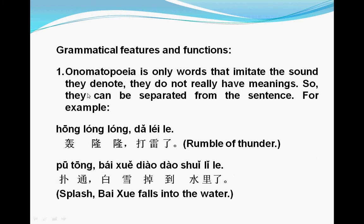Now let's look at some grammatical functions or features of xiāng shēng cí. The first thing we need to know: xiāng shēng cí are words that imitate sound — they do not really have meaning on their own. So they can be separated from the sentence. For example, hōng lōng lōng dǎ léi le. You can just say dǎ léi le, but if you say hōng lōng lōng dǎ léi le, it's like you're describing the rumble of thunder.